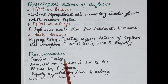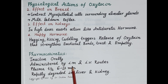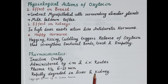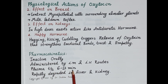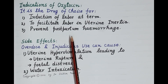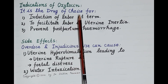Regarding pharmacokinetics, oxytocin is inactive orally and is therefore administered by intramuscular or intravenous routes. It is rapidly metabolized in the liver and kidney and has a very short half-life of six to twelve minutes.